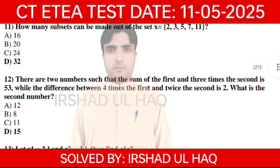Question 12. There are two numbers such that the sum of the first and three times of the second number. Option number D is 15.